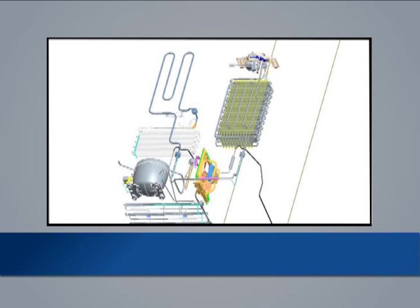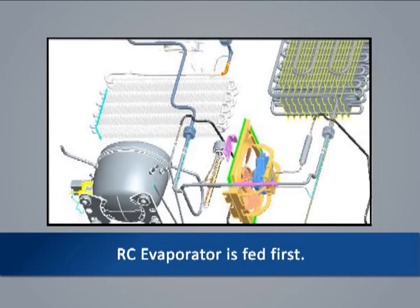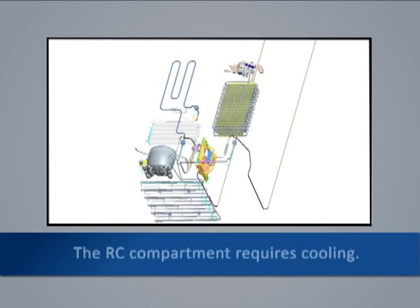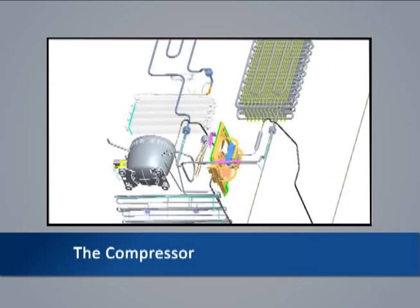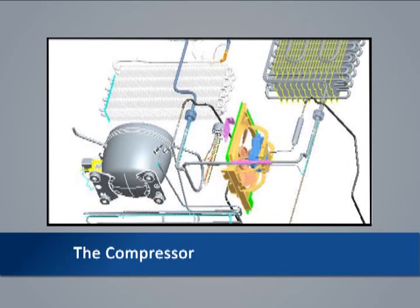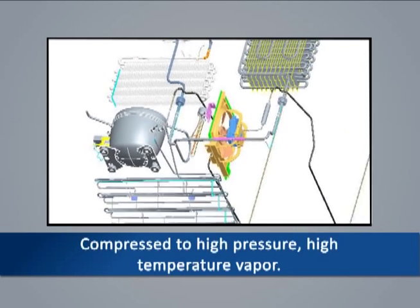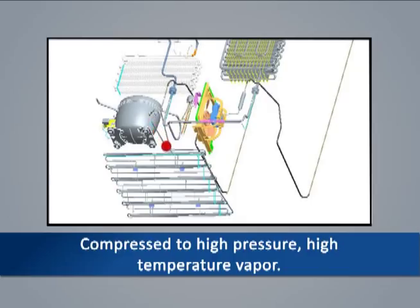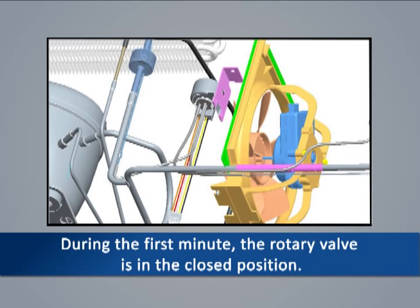On initial startup of a dual evaporator system, the RC evaporator is fed first. After that, the control supplies refrigerant to the evaporator most in need of cooling. Assume the board has determined the RC compartment requires cooling. Starting at the compressor, the compressor and condenser fans are energized by the control board. The compressor pulls low pressure, low temperature refrigerant vapor through the suction line from the RC evaporator, compresses it to a high pressure, high temperature vapor, and it exits through the discharge line to the condenser. During the first minute of compressor operation, the rotary valve is in the closed position.